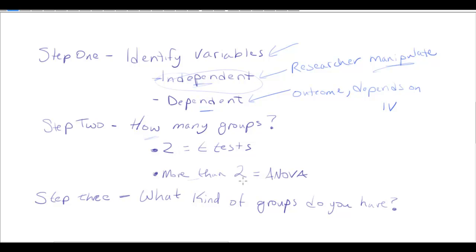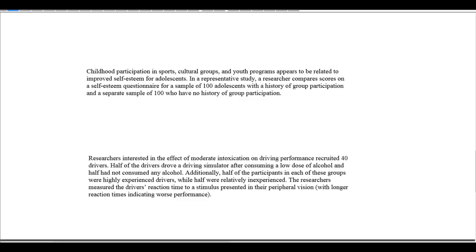Step three is to define what kinds of groups you have. Are your two groups a sample and a population value? If so, that is a one-sample t-test. If your two groups are two independent groups assigned by a researcher, that's an independent samples t-test. If your two groups are performance on a research methods quiz before and after a course, that's paired samples. What kind of groups you have will help you answer these questions.